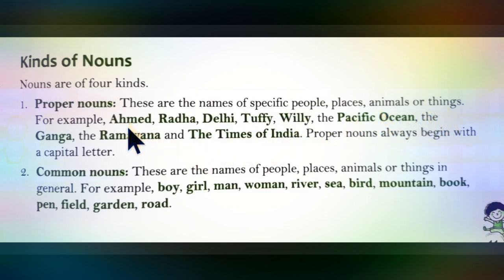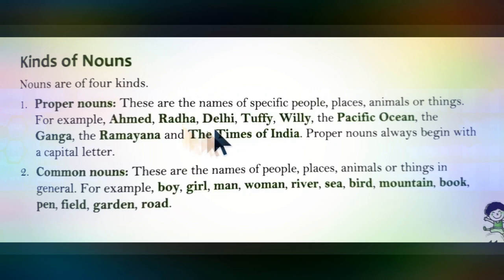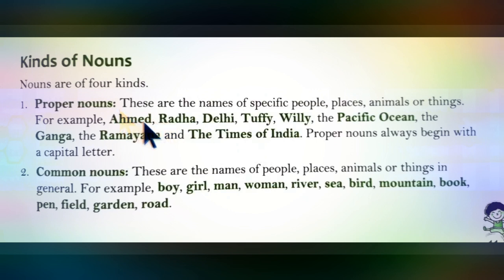For example, Ahmad is a proper noun because it is the name of a specific person. Radha is a proper noun because it is the name of a particular person. Delhi is a proper noun because it is the name of a specific place. Other examples include Pacific Ocean, Ganga, the Ramayana, and the Times of India. These are all examples of proper nouns, and one thing to note is that proper nouns always begin with a capital letter.